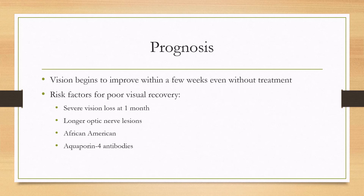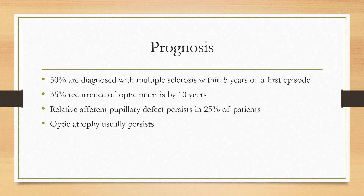For prognosis, vision begins to improve within a few weeks even without treatment. Risk factors for poor visual recovery include severe vision loss at one month, longer optic nerve lesions on MRI, African American race, and aquaporin-4 antibodies. About 30% of patients diagnosed with optic neuritis will have a diagnosis of multiple sclerosis within five years of their first episode.